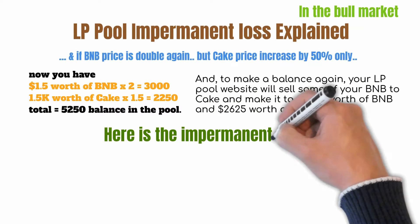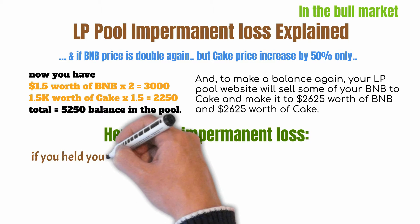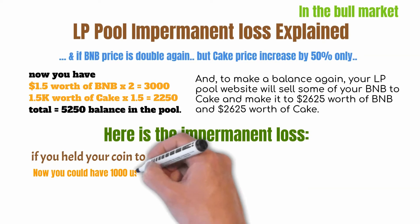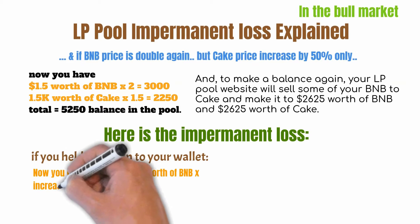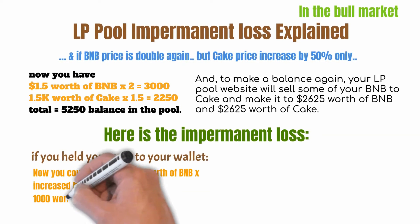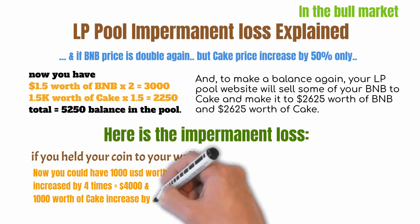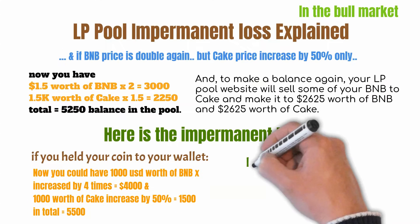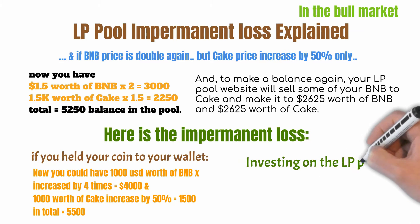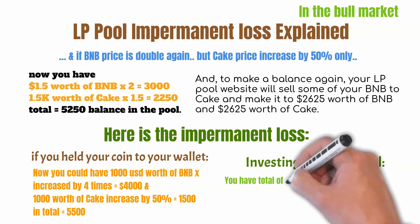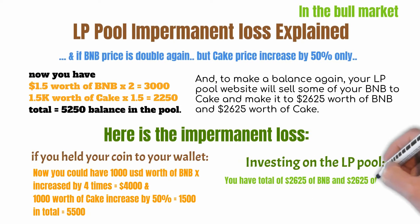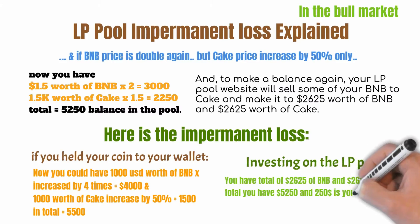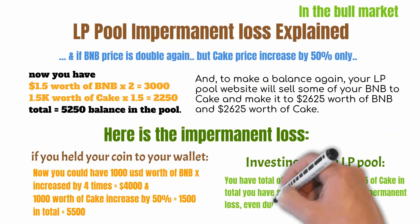Here is your impermanent loss. If you had simply held your coins in your wallet, you could have $1,000 worth of BNB increased by 4 times — that is $4,000 — and $1,000 worth of Cake increased by 50% — that gives $1,500 — for a total of $5,500. Since you invested in the liquidity pool, you now have $2,625 of BNB and $2,625 of Cake, totaling $5,250. The difference of $250 is your impermanent loss, even during the bull market.